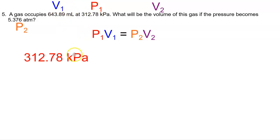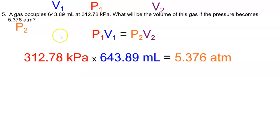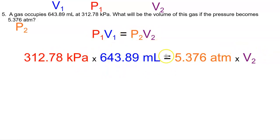We're going to plug numbers in from above — I plug my pressure in where pressure goes, and remember these are multiplying side by side. So we're going to take our pressure and volume: 31278 kPa times 643.89 mL, set equal to 5.376 ATM times V2. V2 is what we're looking for. Now, every single calculation should have a generic formula, then numbers with units underneath, and then we solve.